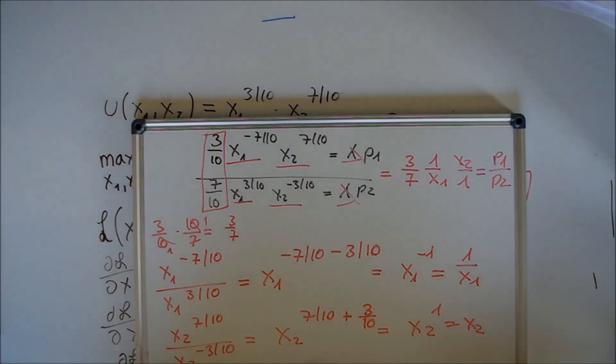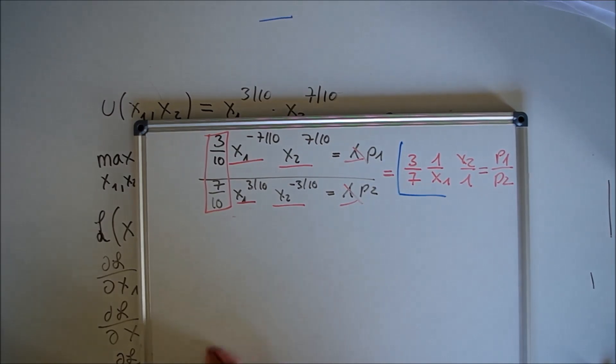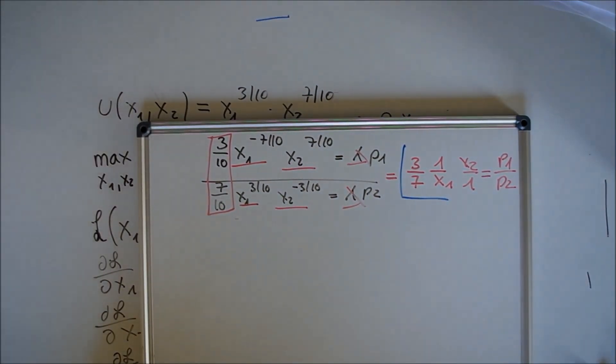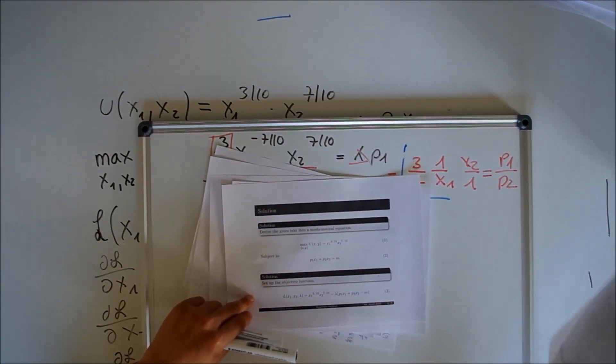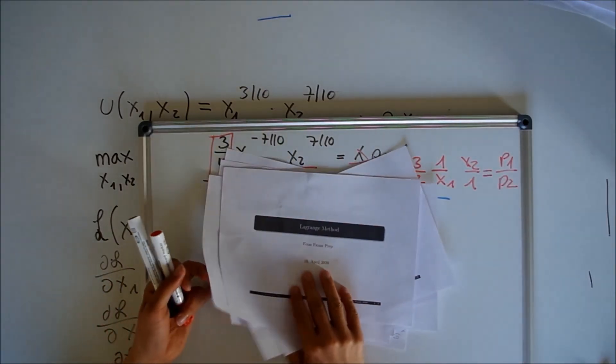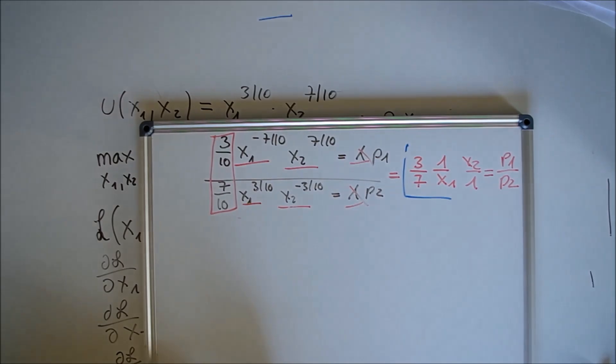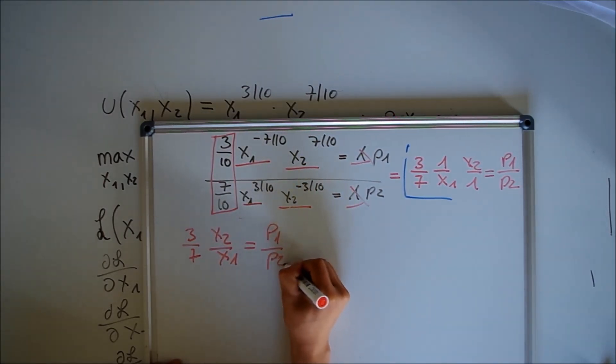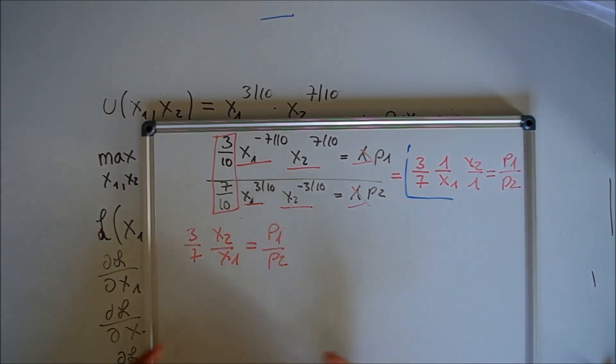This gives us x2/x1 = (3/7)*(p1/p2). This is the marginal rate of substitution equals the price ratio. That's something you should know and write down.